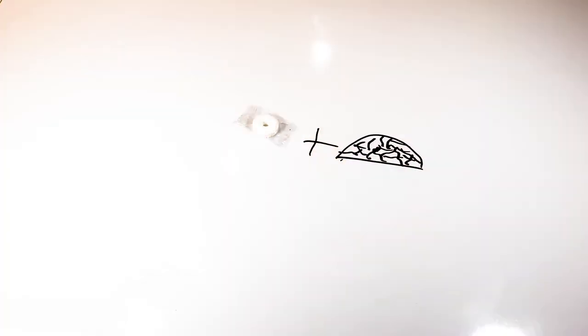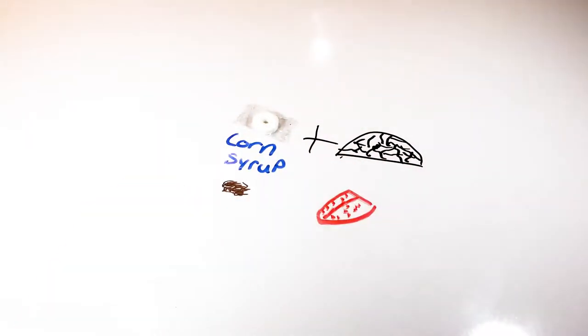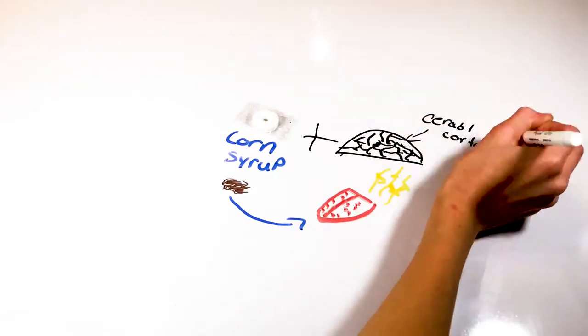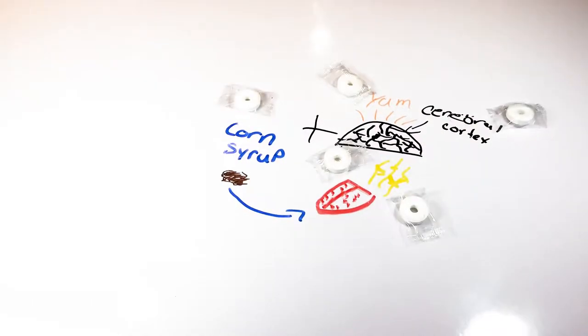First we need to understand how spearmint makes the brain react. For one thing, the candies themselves contain corn syrup, which when it comes in contact with your taste buds, goes to your cerebral cortex, acting on the reward center of your brain or dopamine, which says more please.